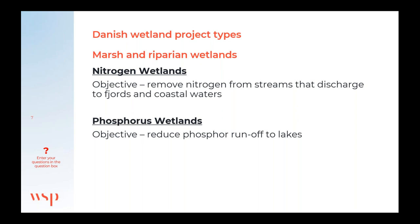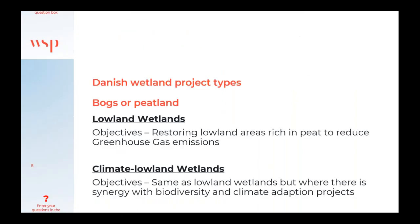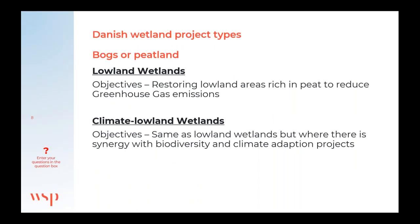Phosphorus wetlands are designed to reduce phosphorus runoff to lakes by raising and re-meandering streams and restoring the riparian areas to create regular flooding. The next type involves bogs or peatlands, called lowland wetlands or climate lowland wetlands. The objectives of lowland wetlands are to restore areas rich in peat and reduce greenhouse gas emissions by restoring the natural hydrology through capping drains, removing ditches, or stopping pumping.